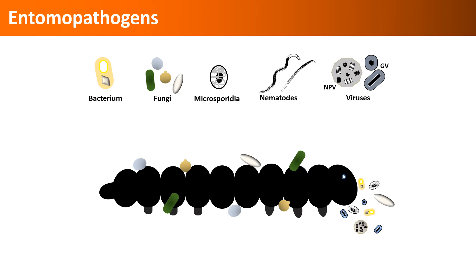Fungi cause infections when they come in contact with their host. Nematodes actively search for their hosts, enter the host body through natural openings, and kill them with the help of symbiotic bacteria. Depending on the type of pest, where it feeds on a plant, and how it feeds, these entomopathogens can be used for managing a wide variety of arthropod pests.